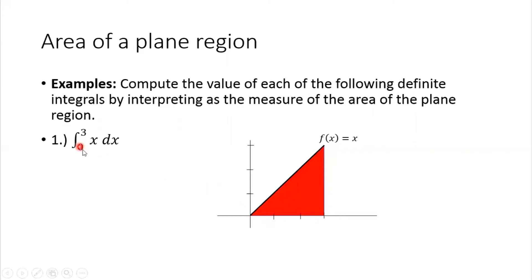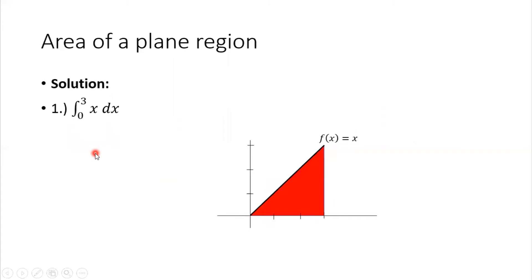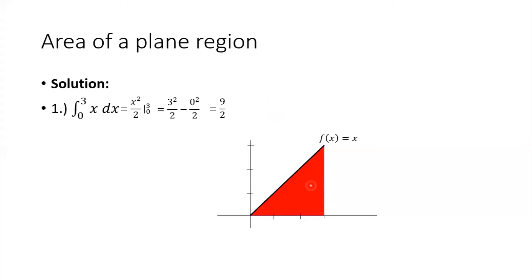Now, let's apply the definite integral to verify it's really 9/2. Solving the definite integral, we first find the antiderivative, which is x squared over 2. Then we evaluate from 0 to 3. By the first fundamental theorem of calculus, we substitute 3 (the upper limit) for x: we get 3 squared over 2 minus 0 squared over 2, giving us 9/2, which coincides with the answer using base times height over 2.